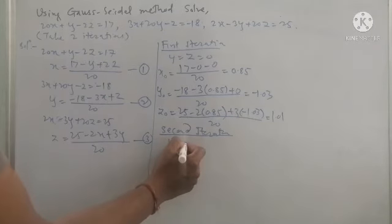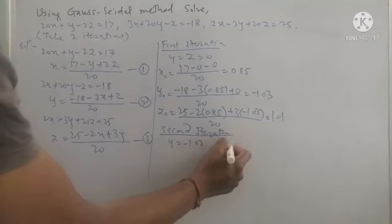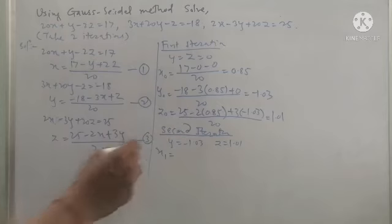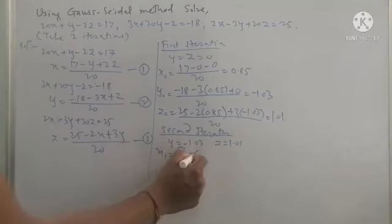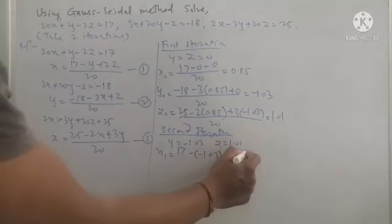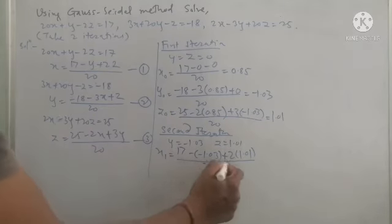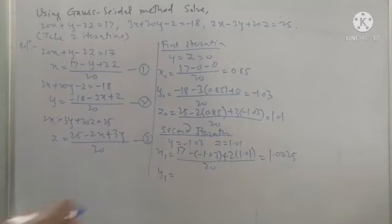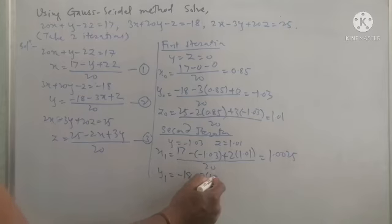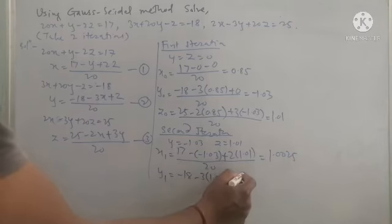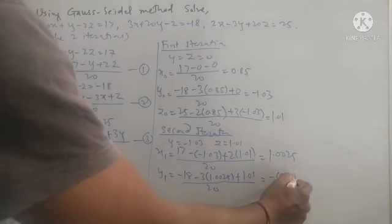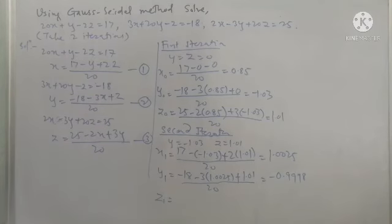For the second iteration, we take initial values y = -1.03 and z = 1.01. To find x1, putting y = -1.03 and z = 1.01 in equation 1: (17 - (-1.03) + 2×1.01) / 20 = 1.0025. For y1, using x = 1.0025 and z = 1.01 in equation 2: (-18 - 3×1.0025 + 1.01) / 20 = -0.998.